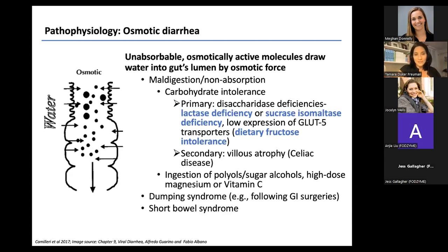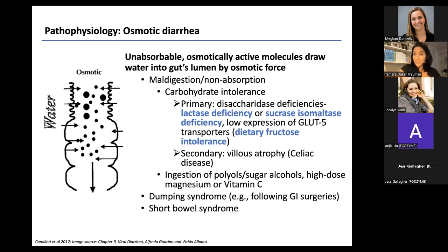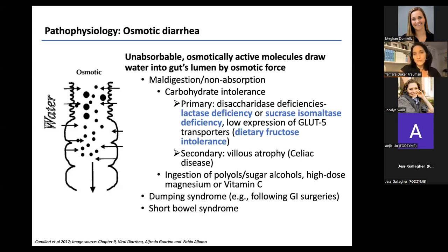New-onset lactose intolerance can be an early sign of celiac disease — keep that on your radar. Everyone malabsorbs sugar alcohols or polyols — no human absorbs them well — so anyone who eats enough of them will develop osmotic diarrhea. The product reviews for sugar-free gummy bears on Amazon offer very graphic explanations of this. High-dose magnesium — around 350 to 400 mg or more — and high-dose vitamin C also cause osmotic effects, which is why we use them as laxatives. Miralax and lactulose are also osmotic laxatives, as are all poorly absorbed molecules that draw water into the bowel.